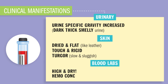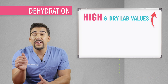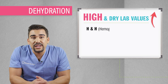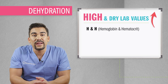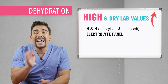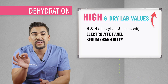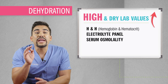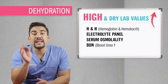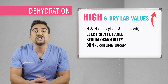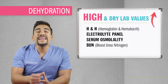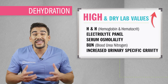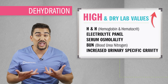Common lab values for dehydration include high hemoglobin and hematocrit (H&H), high electrolyte panels, high serum osmolality — basically very heavy-weighted blood — high or increased blood urea nitrogen (BUN), which measures kidney function, as well as increased urinary specific gravity, meaning heavy, dark, smelly urine.